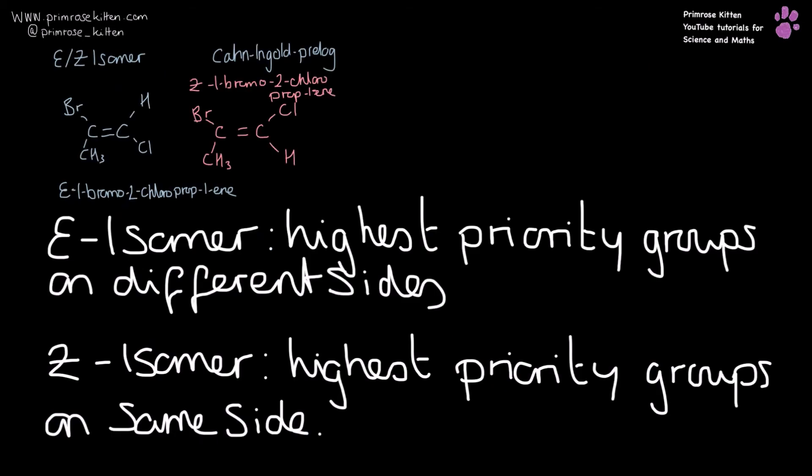So here it is again for you. The E isomer, the highest priority groups are on different sides, and the Z isomer, the highest priority groups are on the same side.